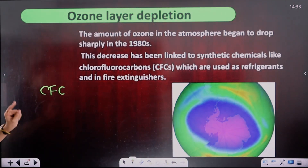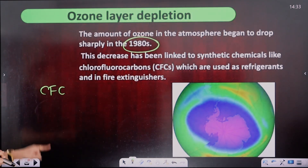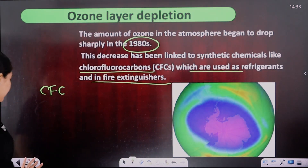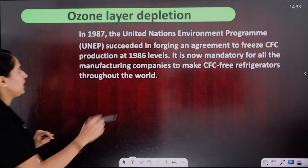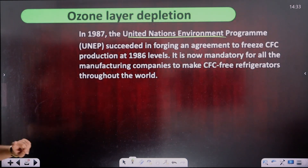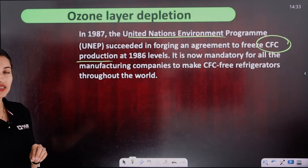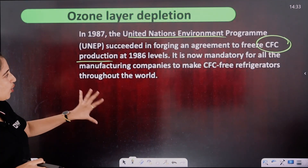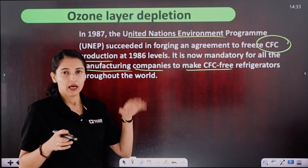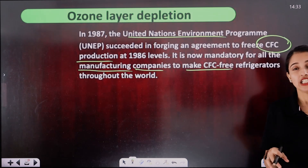The amount of ozone in the atmosphere began to drop sharply in the 1980s. This decrease has been linked to synthetic chemicals like chlorofluorocarbons, used in refrigerators and fire extinguishers. In 1987, the United Nations Environment Programme succeeded in forging an agreement to freeze CFC production at 1986 levels. It is now mandatory for all manufacturing companies to make CFC-free refrigerators throughout the world.